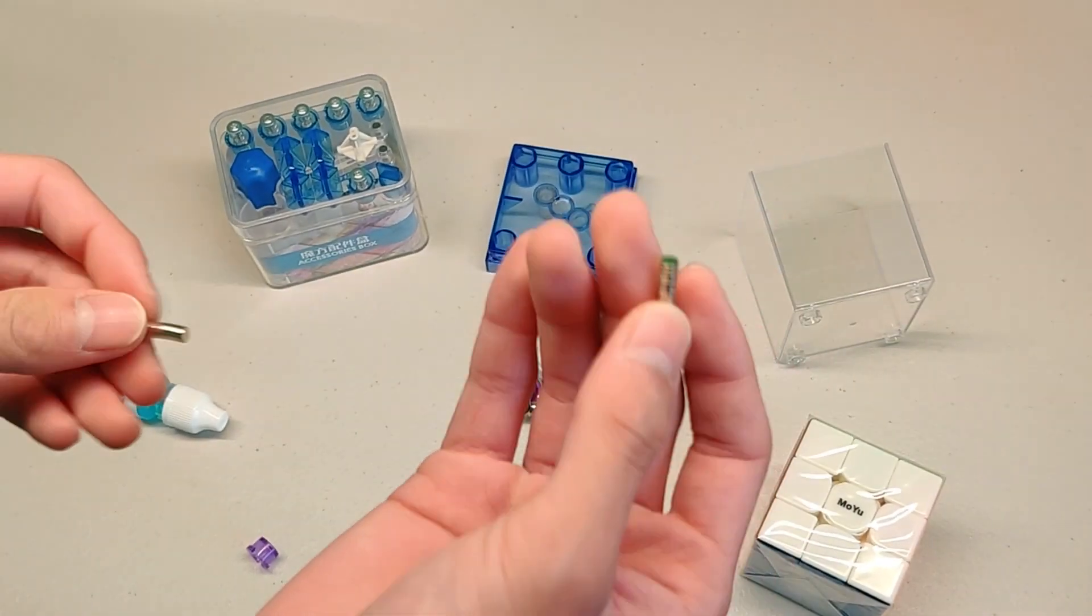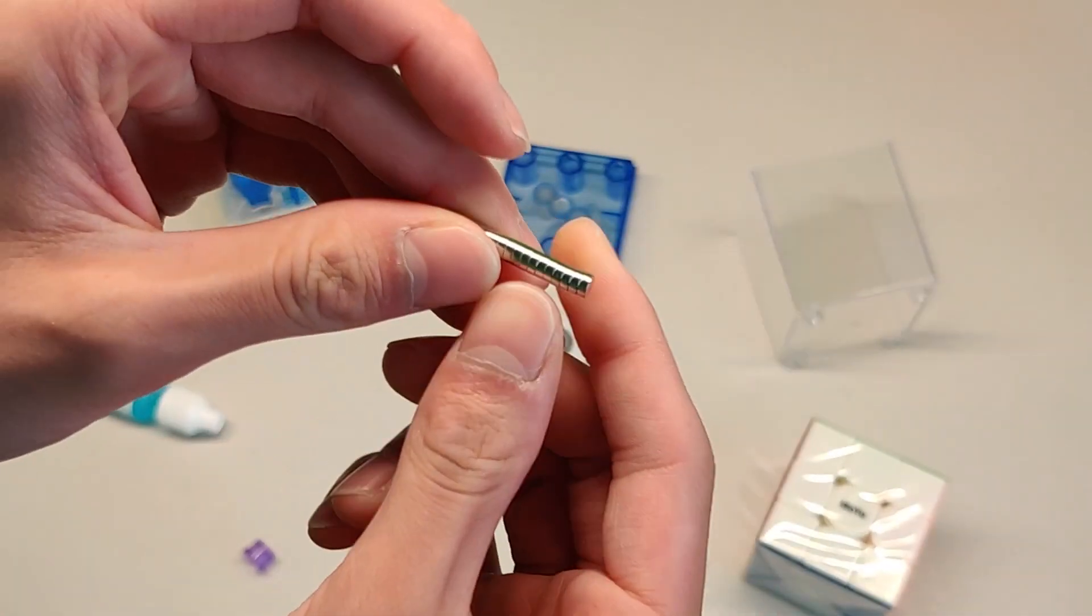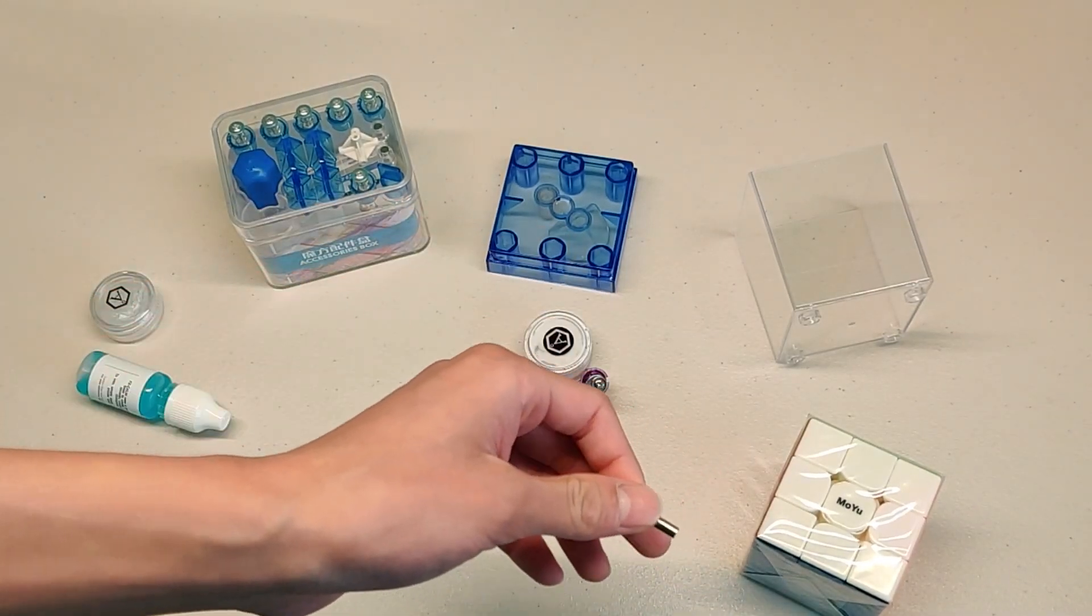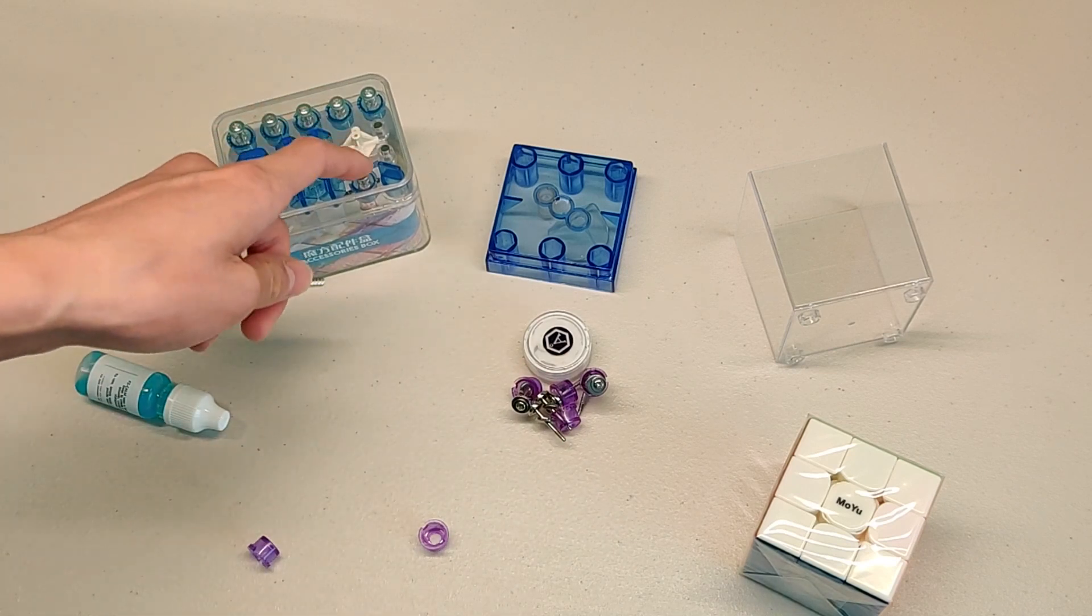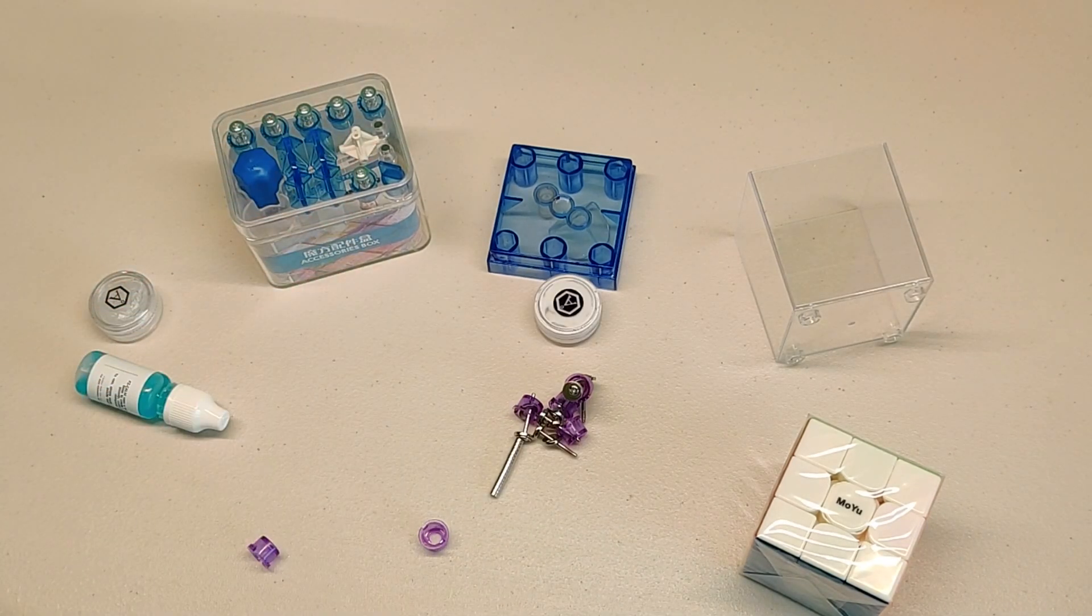There's two different types of magnets right here. There's these smaller ones which are thinner, and there's these larger ones which are thicker, and these are the ones I'm going to be using to make the magnets in this cube stronger. The thing is, I don't have enough of these. I have 18 here, but luckily there's six more large magnets in this container, so let's take those out.